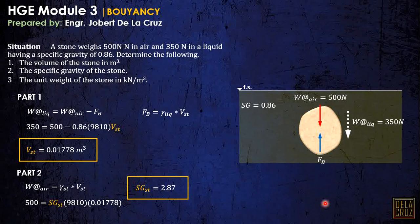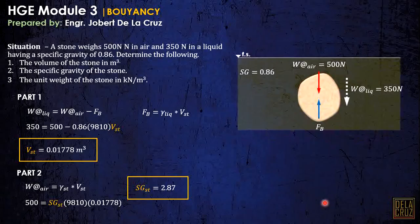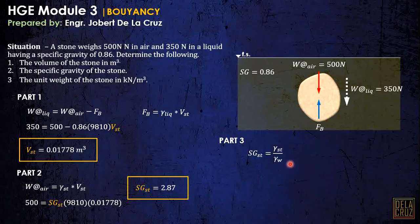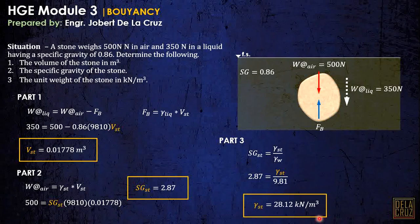For number 3, find the unit weight of the stone in kilonewtons per cubic meter. Unit weight is gamma of the stone, which equals specific gravity of the stone times gamma of water. Substitute the specific gravity value already found and cross-multiply to obtain the unit weight of the stone. Alternatively, this can be calculated directly from the earlier formulas — you can manipulate the formulas as needed.